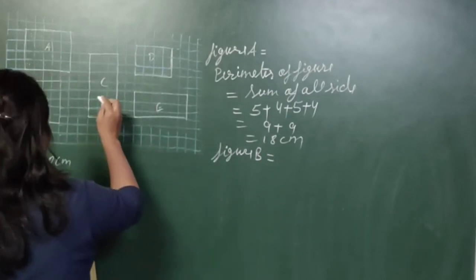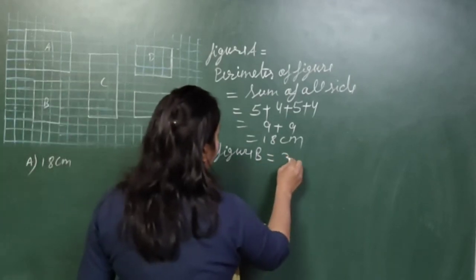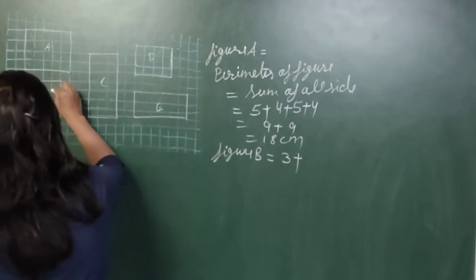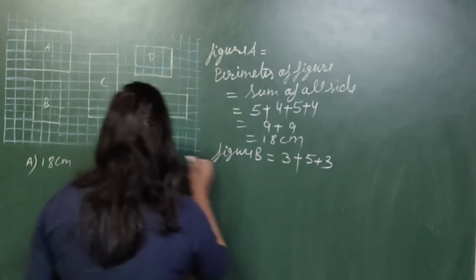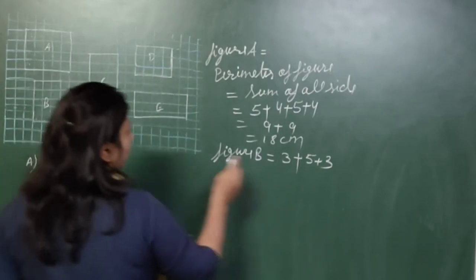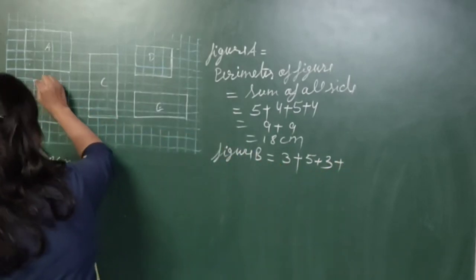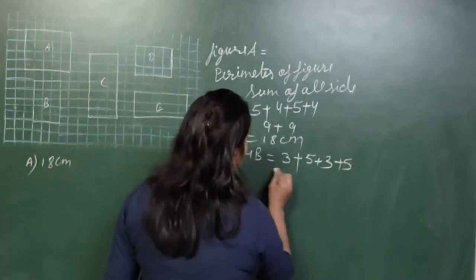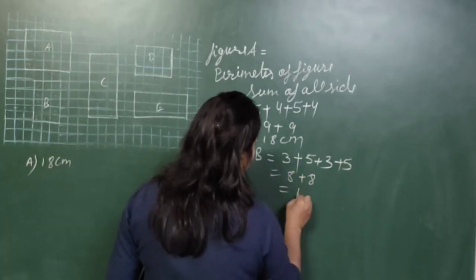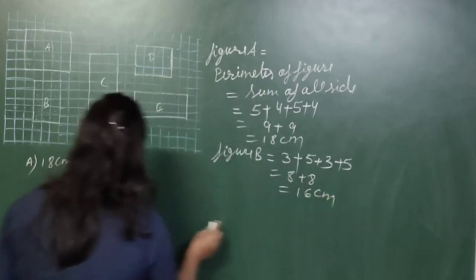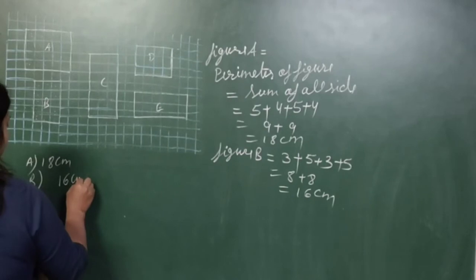Now figure B. Using sum of all sides: the length is 5, breadth is 3, length again is 5, breadth is 3. So 5 + 3 = 8, and 5 + 3 = 8, giving 8 + 8 = 16 centimetres. Figure B has a perimeter of 16 centimetres.